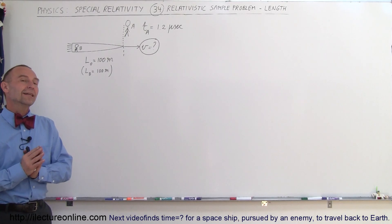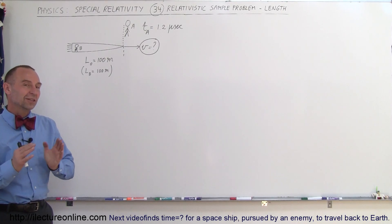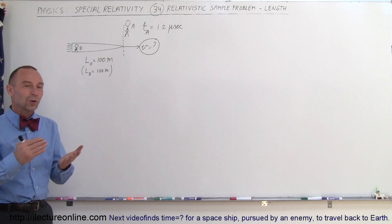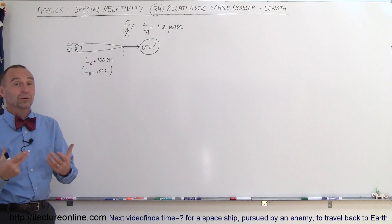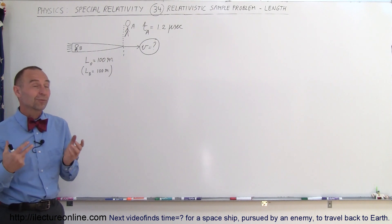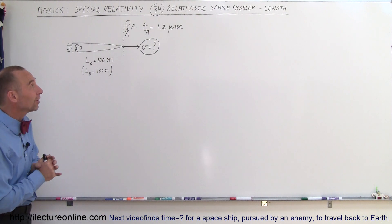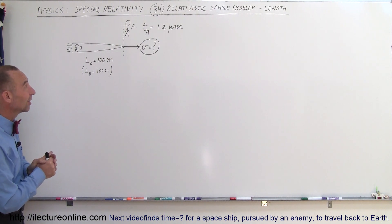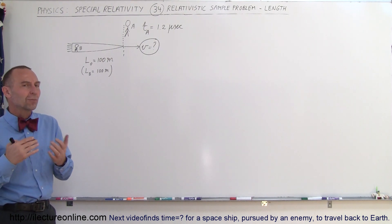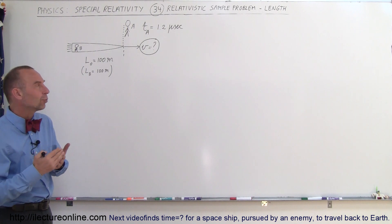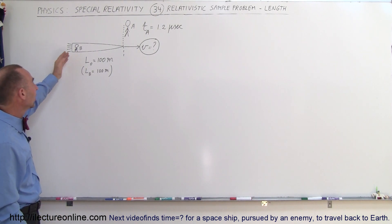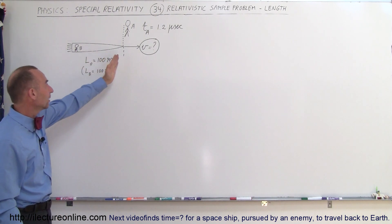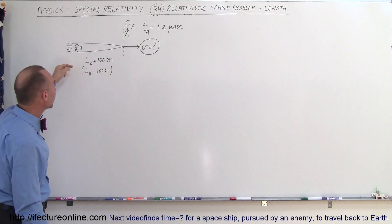Welcome to Electron Online. Now that we've seen lots of videos with all kinds of theory, let's put all that theory into practice. Here are some sample problems, and the first problem is something to do with length. An object that moves really fast will be observed by the person moving along with the object to be a certain length — in this case, a space rocket.